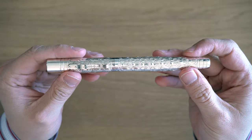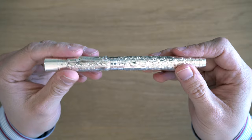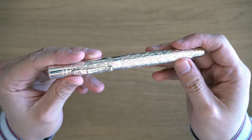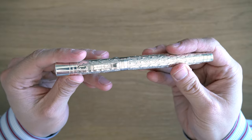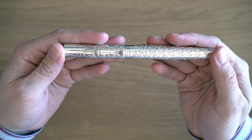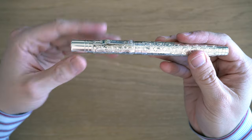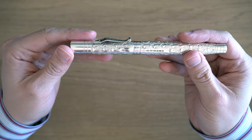Here we have the Yard-O-Lead Viceroy Grand Victorian Fountain Pen. Very long name for this pen. So let's just do a walkthrough. The whole pen is solid sterling silver, or the body and the caps are solid sterling silver.